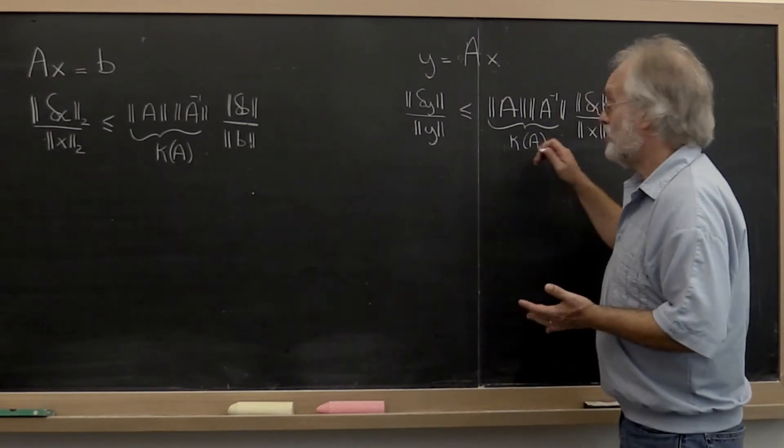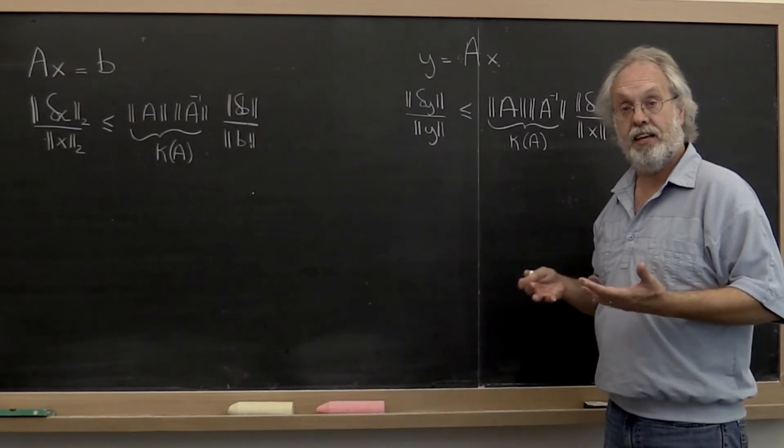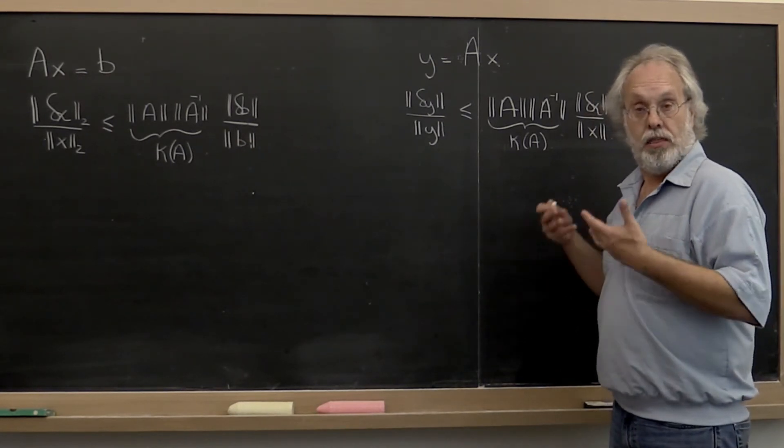And again, the condition number of an arbitrary matrix A could be pretty bad. If A is almost singular, then it would be bad.